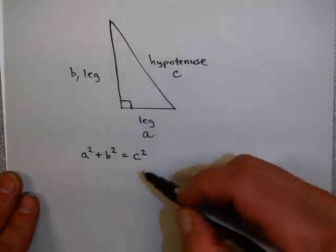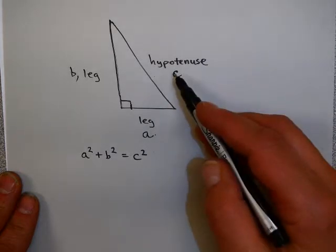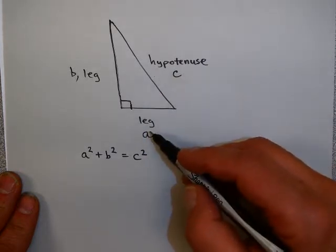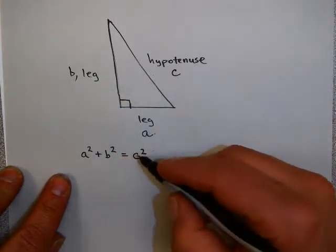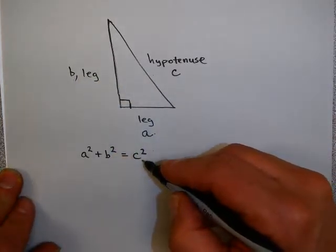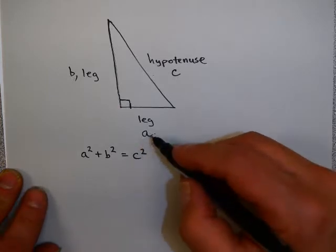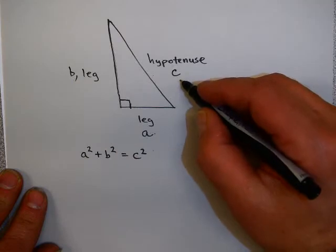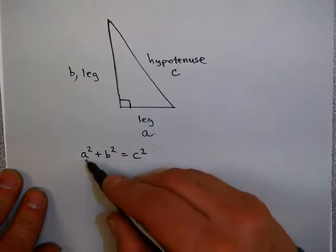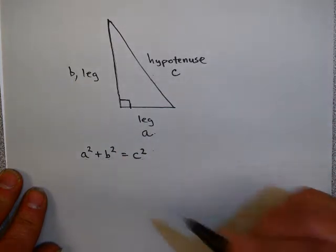The side opposite the 90 degree angle is called the hypotenuse. It turns out Pythagoras discovered that in all right triangles, the following relationship holds: the sum of the squares of the legs equals the square of the hypotenuse. So, written in symbols, if A and B are legs and C is the hypotenuse, then a squared plus b squared equals c squared.